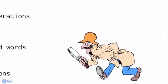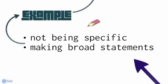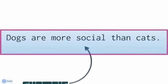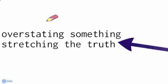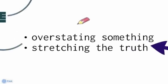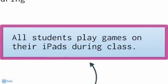Here are some clues to look for. First, generalizations — these are broad overall statements where the author is not being specific, very similar to statements we saw in the climate change articles. For example: 'Dogs are more social than cats.' Another clue is exaggerations, where the author is overstating something or stretching the truth. For example: 'All students play games on their iPads during class.'